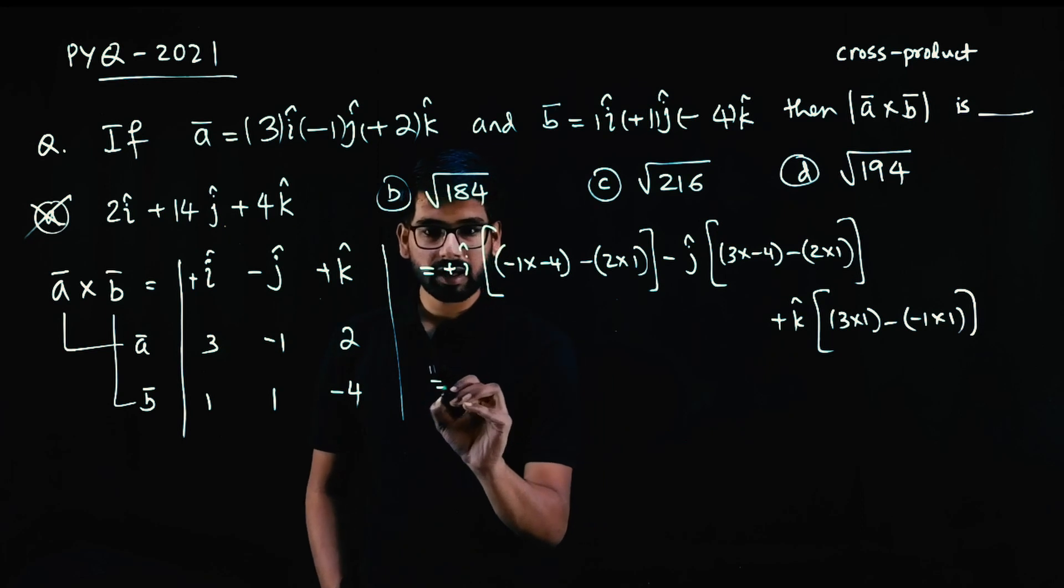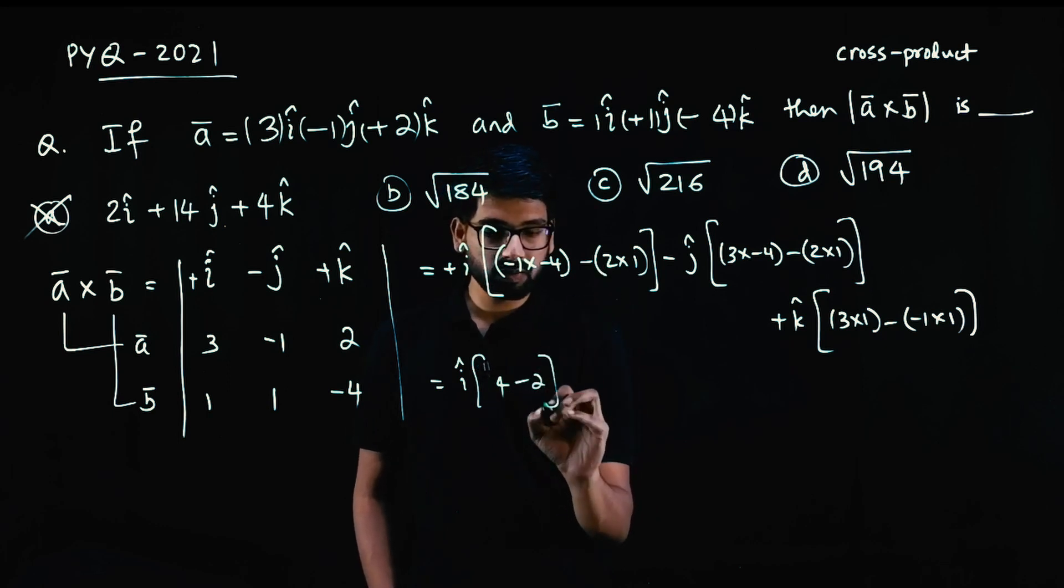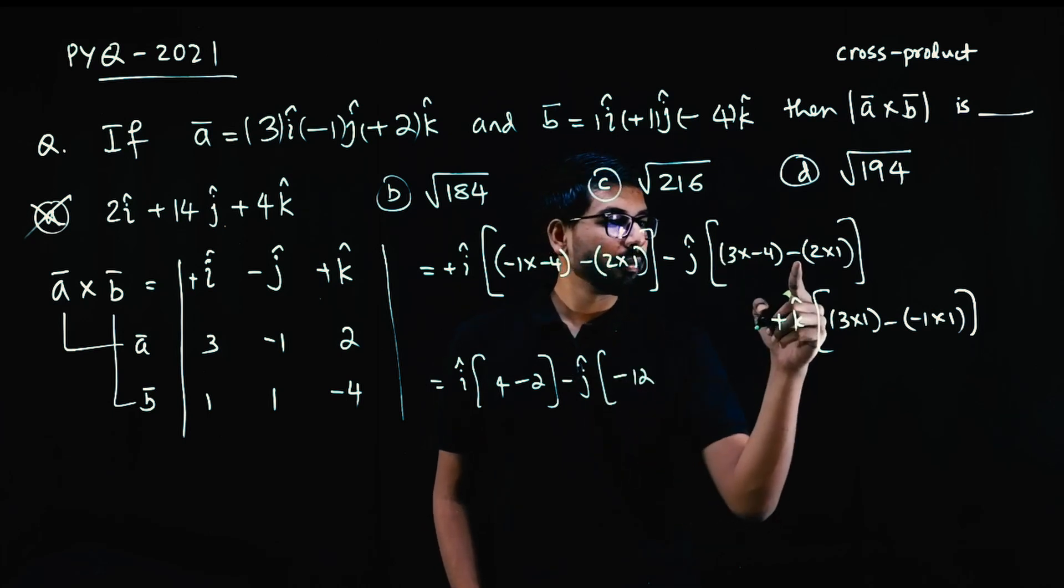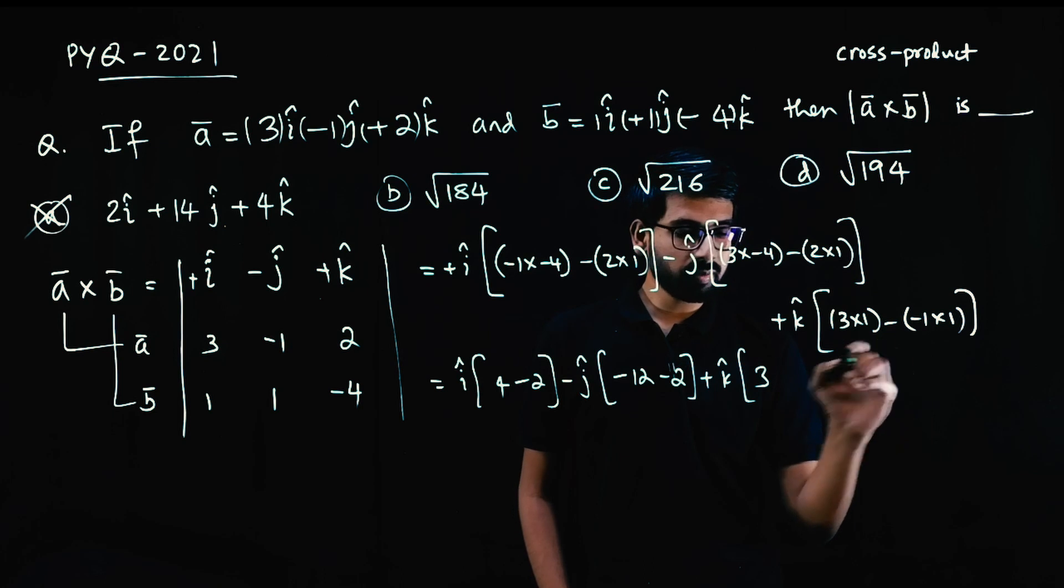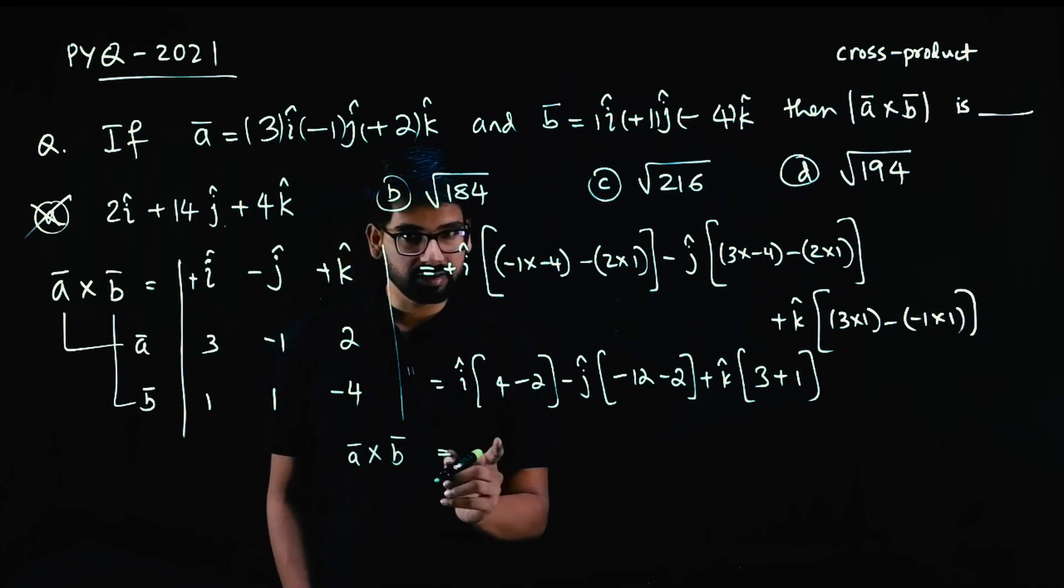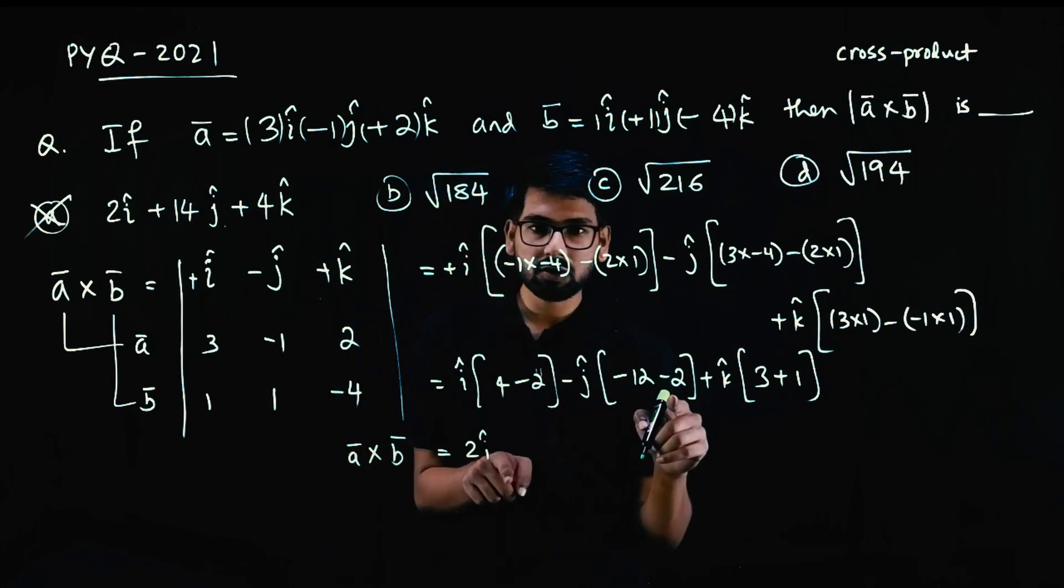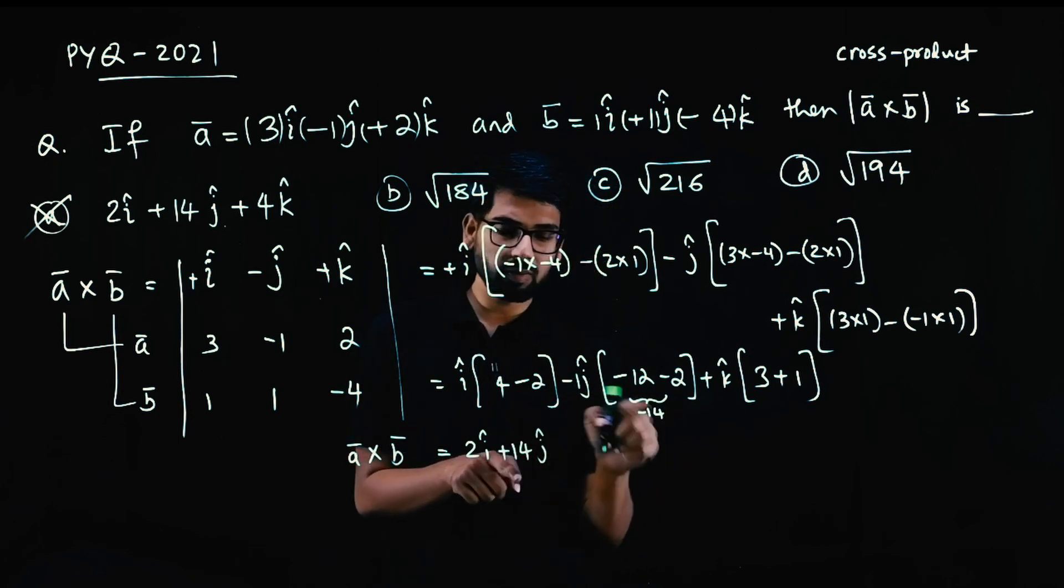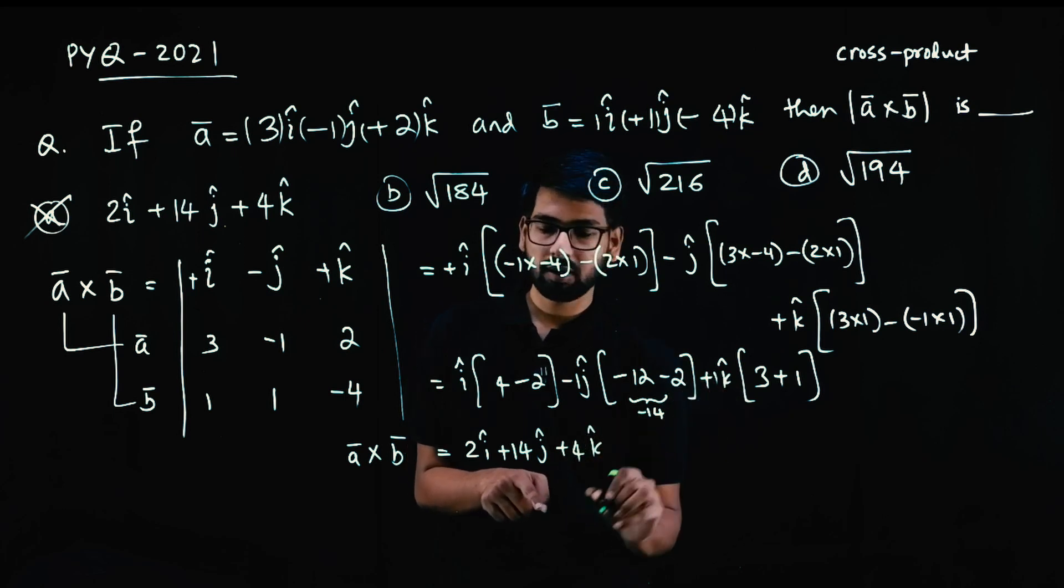This is how you solve a determinant. So i as it is, minus into minus plus, 1 into 4 is 4 minus 2 into 1 is 2. Minus j as it is, plus into minus is minus, 3 into 4 is 12 minus 2 into 1 is 2. Plus K as it is, 3 into 1 is 3 minus into minus plus, 1 into 1 is 1.